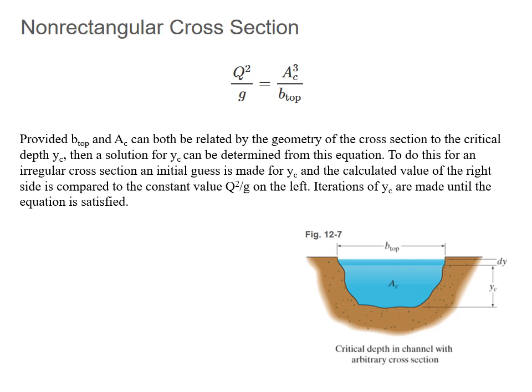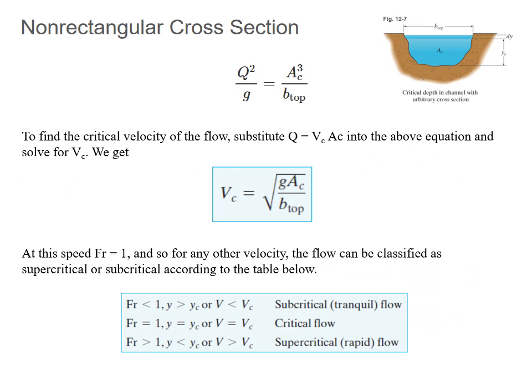For an irregular cross-section, an initial guess is often made for Yc, and then the calculated value of the right side is compared to Q²/g on the left. Iterations of Yc are made until the equation is satisfied. The best approach is to do this numerically. For a non-rectangular cross-section, the critical velocity can also be found by substituting back into the equation. At this speed the Froude number equals 1, and for any other velocity the flow can be classified as supercritical or subcritical according to the classification table.